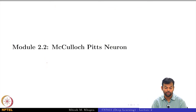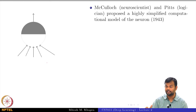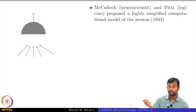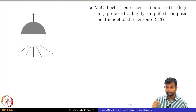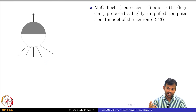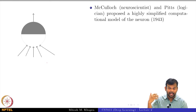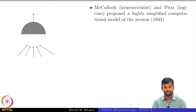Let us start with module 2, which is about the McCulloch-Pitts neuron. As we had discussed during the history lecture, way back in 1943 McCulloch and Pitts proposed a highly simplified computational model of the brain. We know that our brain is capable of very complex processing — it is capable of taking a lot of inputs from various sources and then helping us take various decisions and actions.